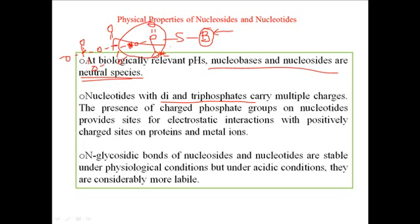That's why it gives a slightly negative charge at the physiological pH. Now the N-glycosidic bond of nucleosides and nucleotides are stable under physiological conditions but under acidic conditions. What are the N-glycosidic bonds?